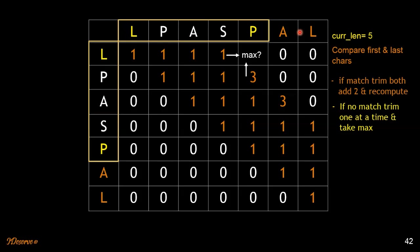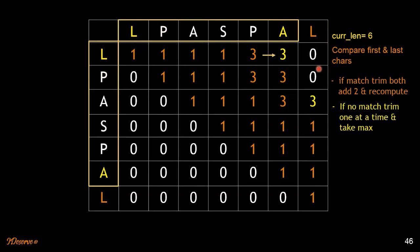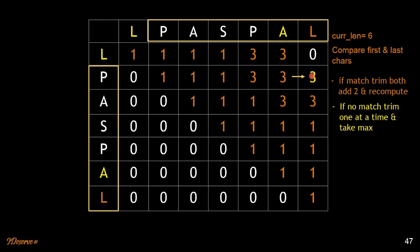For substrings of length 5, the first and last characters do not match. The same applies to the next substring of length 5 and the last substring of length 5 — none have matching first and last characters. For length 6 substrings, they also do not have matching first and last characters, so we take the max in each case.